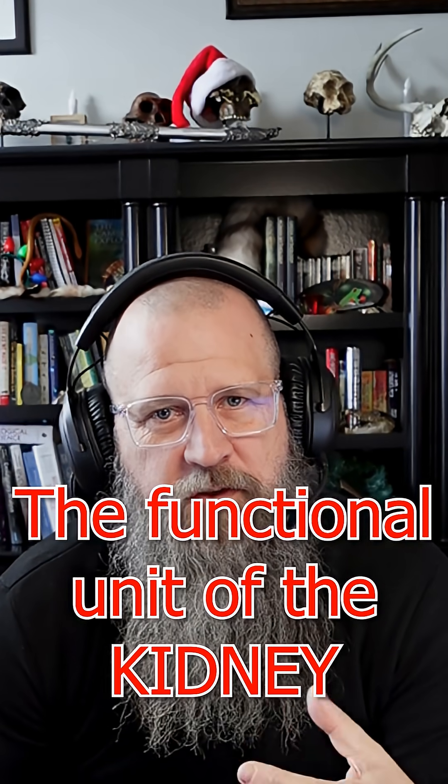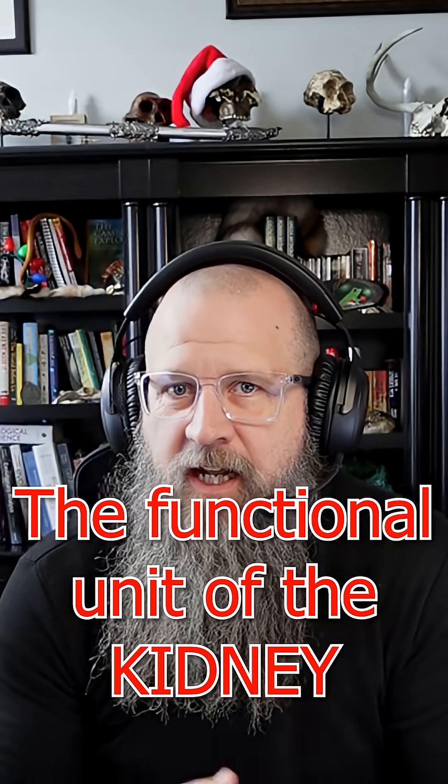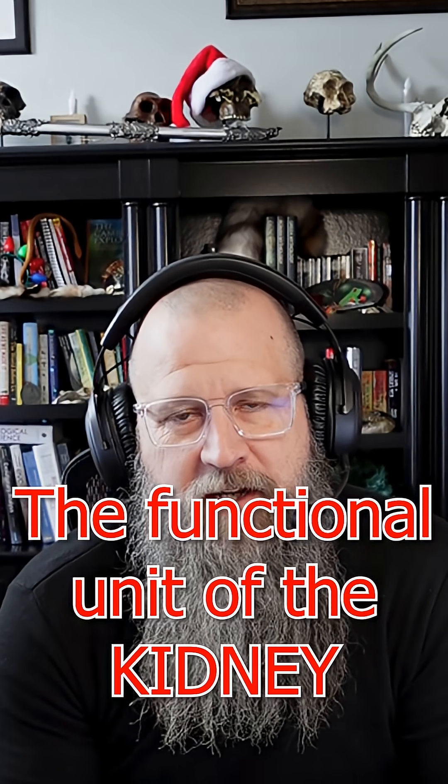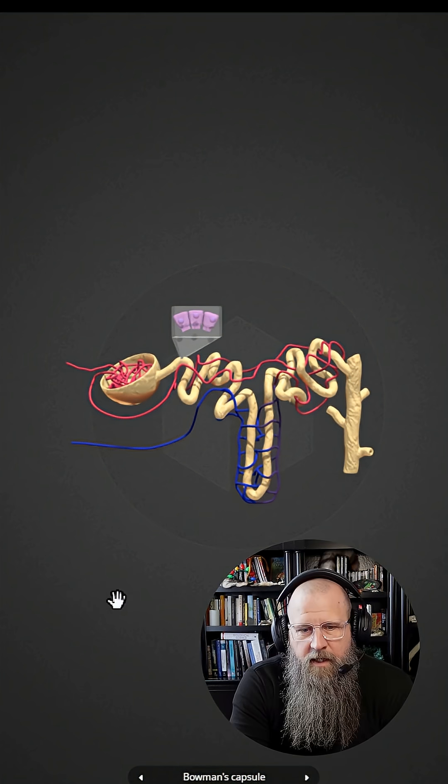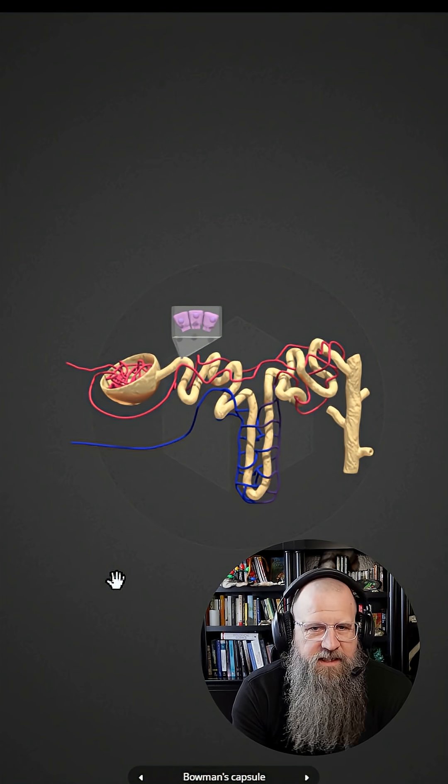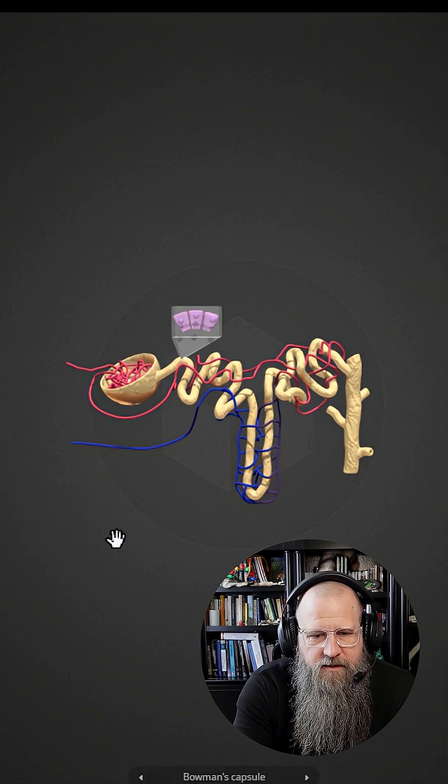Do you know what the functional unit of the kidney is to help you make urine? It's the nephron. Let's take a look at the nephron in a 3D model. Here we have a 3D model of the nephron, I'm using one from Sketchfab. The link will be in the description.